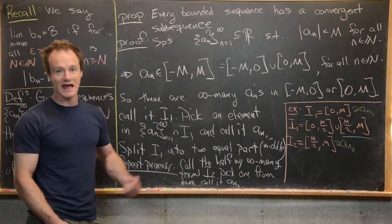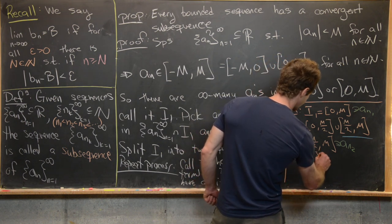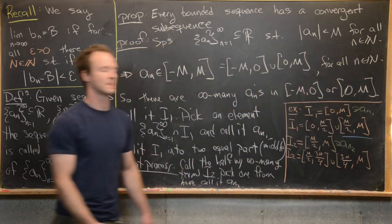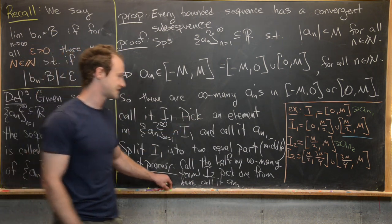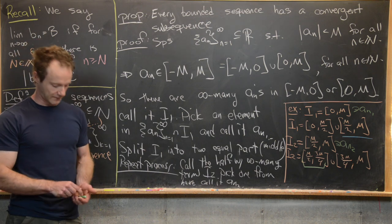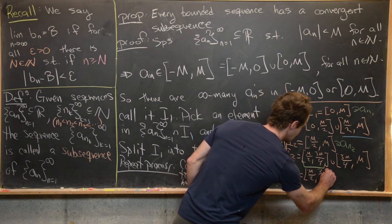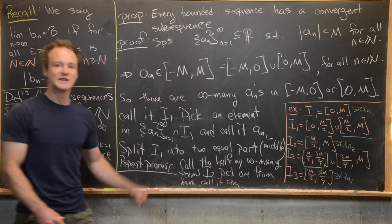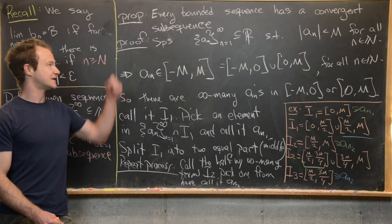We repeat this process again and again, splitting I_2 into two equal pieces — [M/2, 3M/4] ∪ [3M/4, M]. Infinitely many terms are in I_2, so infinitely many are in one of those halves. Say it's [M/2, 3M/4] — rename that I_3 and pick a_{n_3} from there. We repeat this over and over until we've constructed a subsequence of our original sequence a_n.